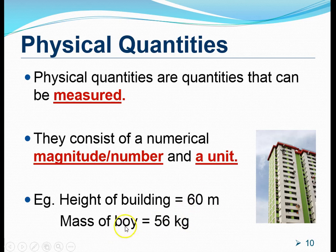Another example of a Physical Quantity is the mass of a boy. The mass of a boy can be 56 kilograms. So the mass of a boy is actually a physical quantity with a numerical magnitude of 56 and a unit, kilogram.